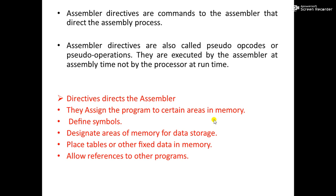Assembler directives can also designate areas of memory for data storage. Since data is variable, memory is allocated based on its size — 8-bit data gets 8-bit memory, 16-bit gets 16-bit, and 32-bit gets 32-bit. They also allow placement of tables or other fixed data in memory.